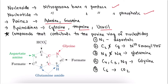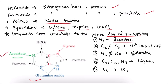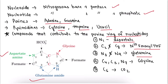Now coming to the main topic — the compounds that contribute to the purine ring of nucleotide. N1 is from the amino group of aspartate. C2 and C8 are from N10-formyl-THF, where THF means tetrahydrofolate. N3 and N9 are from glutamine amide. C4, C5, and N7 are from glycine, marked in red in this image. C6 is from CO2.